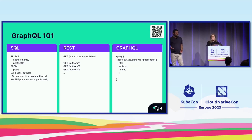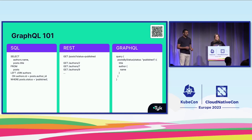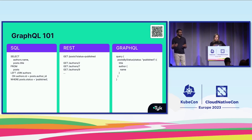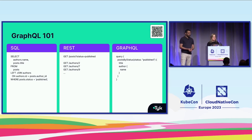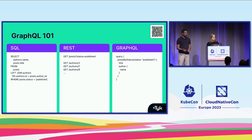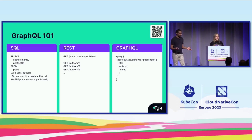GraphQL is a bit more general purpose. Data can reside almost anywhere — a database, across multiple databases, different file systems, other REST, gRPC, SOAP services, and even event-based systems like Kafka. So just like SQL is a declarative query language for databases, GraphQL is a declarative query language for the internet.